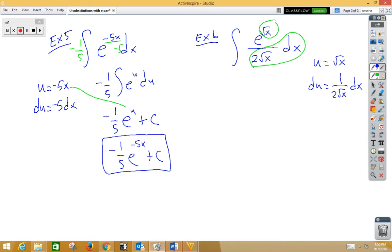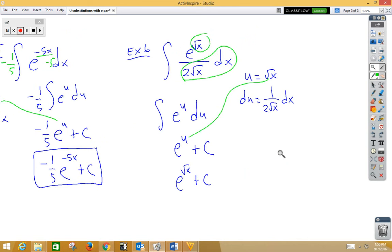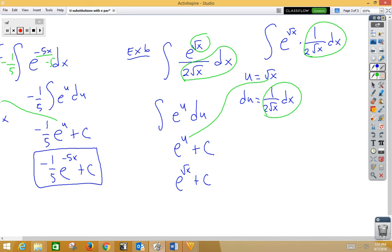So that becomes du. We have the integral of e to the u du, which is, of course, e to the u plus c. But it's not really u. It's really root x. So e to the root x plus c. We need to think of this problem, and I'm going to rewrite it over here so you can see it perhaps a little better, is integral. Think of it as e to the root x times 1 over 2 root x dx. That way, you can maybe see your du a little better.